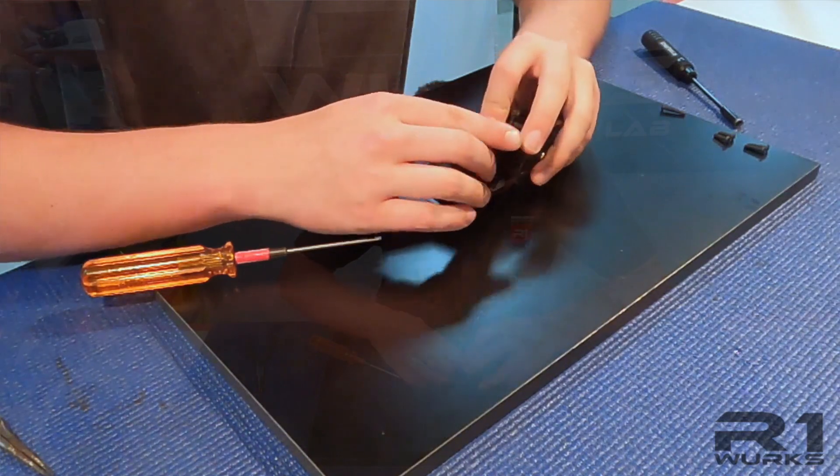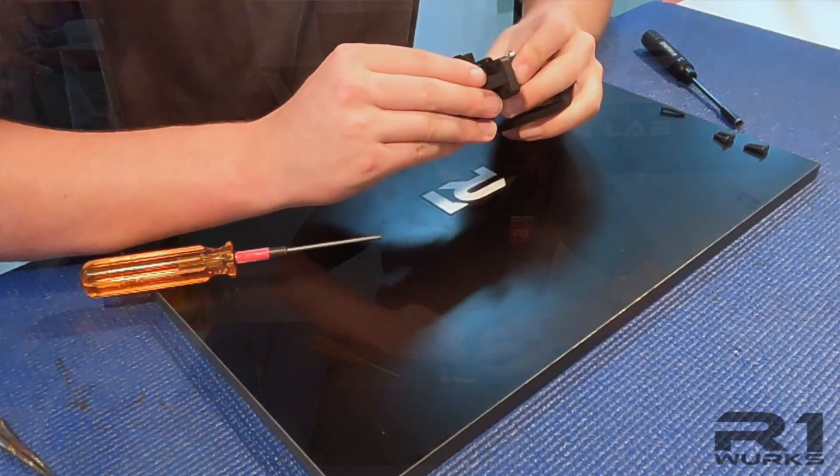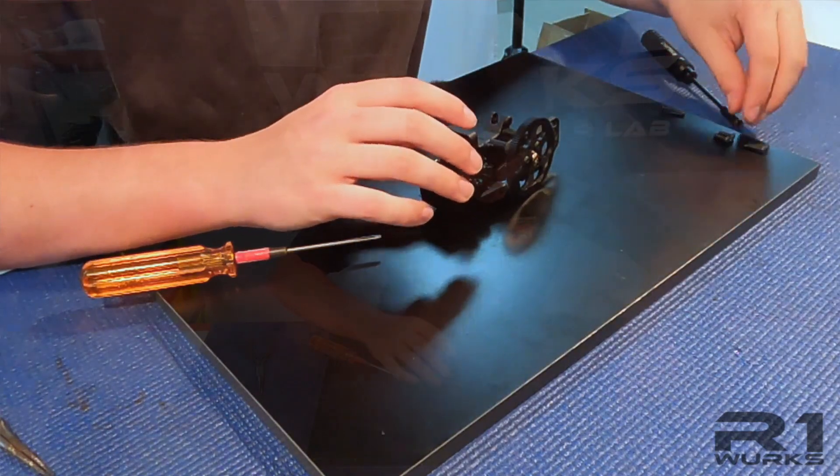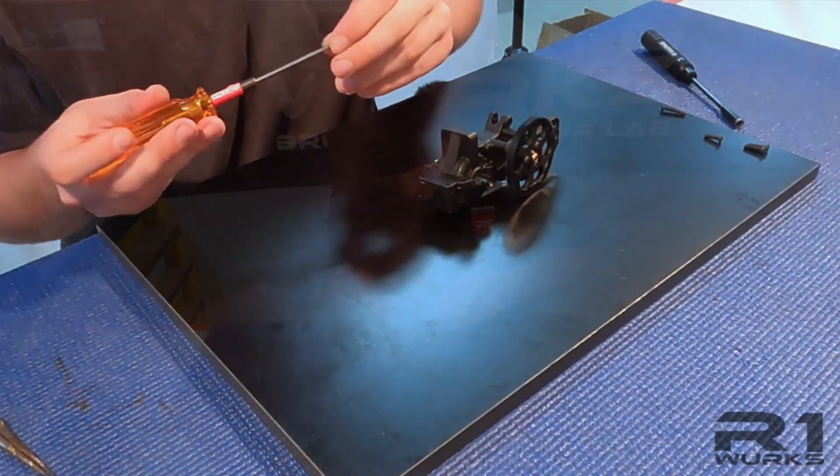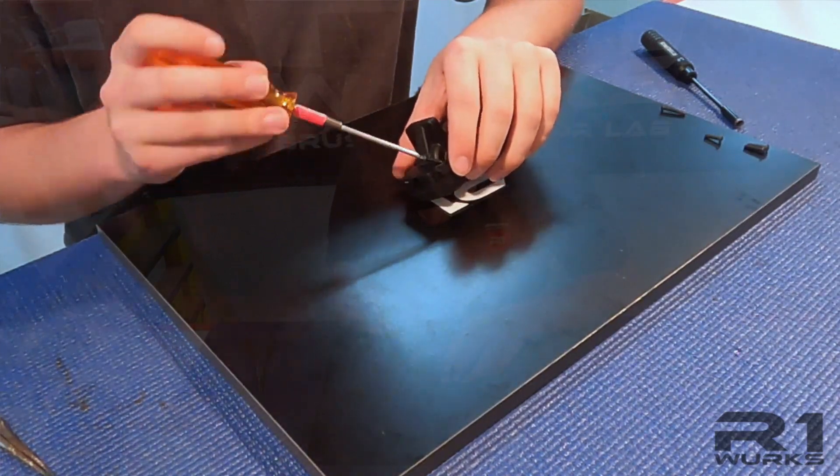Put this top case over. Just like so. And then we are going to use the smallest button head screw in this kit for the back two.